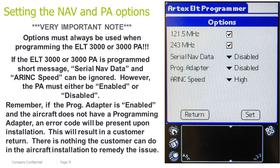Very important note: options must always be used when programming the ELT 3000 or 3000 PA. If the ELT 3000 or 3000 PA is programmed short message, Serial NAV data and wiring speed can be ignored. However, the PA must be either enabled or disabled. Remember: if the programming adapter is enabled and the aircraft does not have a programming adapter, an error code will be present upon installation. This will result in a customer return — there is nothing the customer can do in the aircraft installation to remedy the issue.